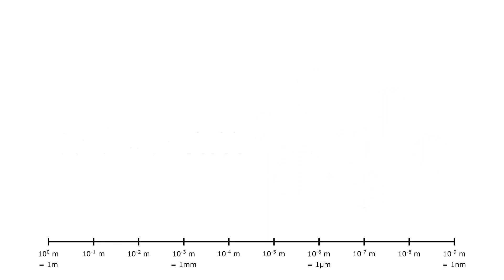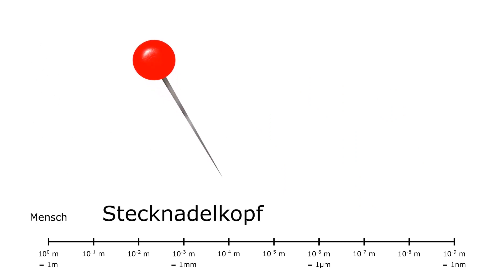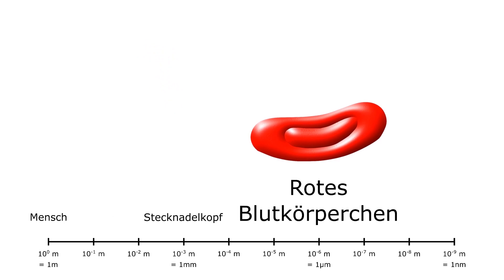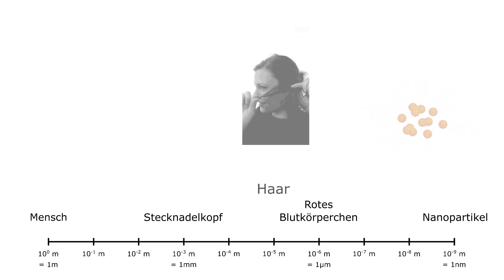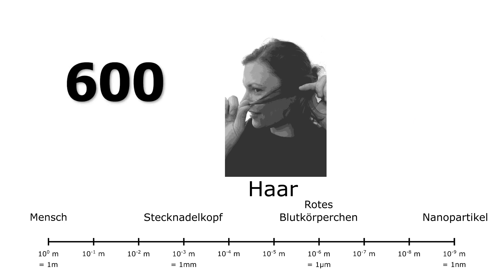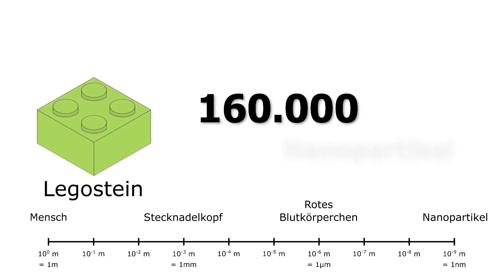Folgende Skala zeigt, wie klein unsere Partikel sind. Unsere Körpergröße wird in Metern angegeben. Die Größe eines Stecknadelkopfes liegt im Millimeterbereich. Tausendmal kleiner als ein Millimeter ist ein Mikrometer. Unsere roten Blutkörperchen sind ungefähr sieben Mikrometer groß und für uns ohne Hilfsmittel nicht mehr zu sehen. Tausendmal kleiner als ein Mikrometer ist dann ein Nanometer. Und damit sind wir in der Größeneinheit unserer Nanopartikel angekommen.